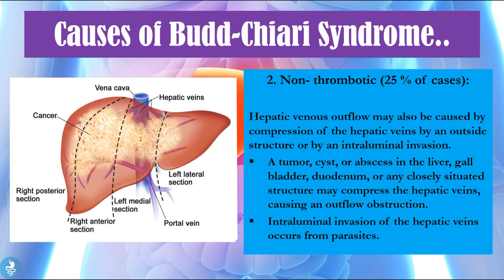We also have non-thrombotic causes in 25% of cases of Budd-Chiari syndrome. This is when the hepatic venous outflow can be compressed by outside structures or by an intraluminal invasion. Any sort of tumour, cyst or abscess in the liver, gallbladder, duodenum or any closely situated structure can compress these hepatic veins and cause an outflow obstruction. Sometimes patients with parasites can have an intraluminal invasion of the hepatic veins, where the parasites enter the vessel and cause a blockage in blood flow.